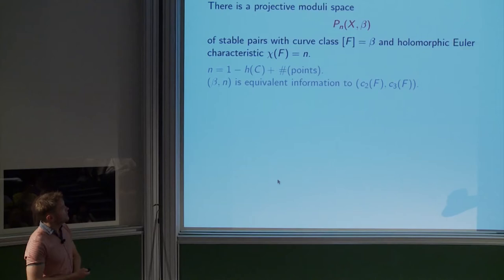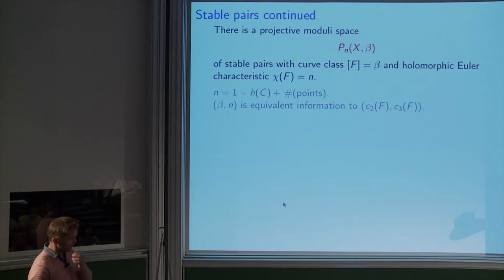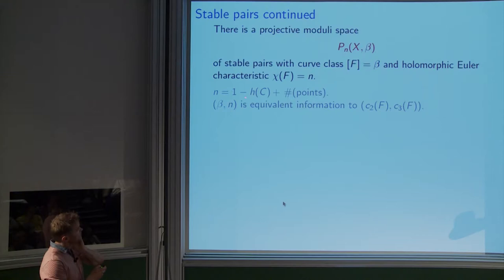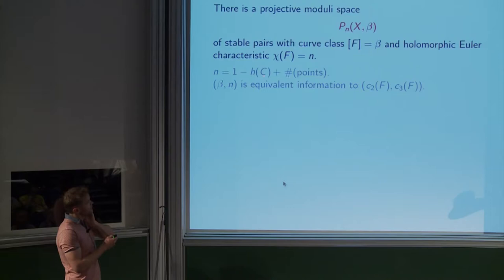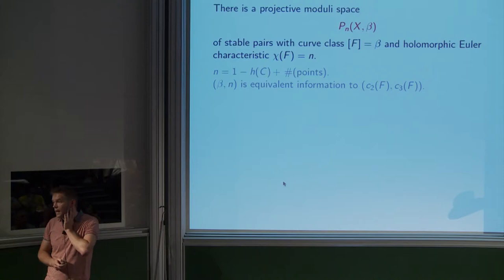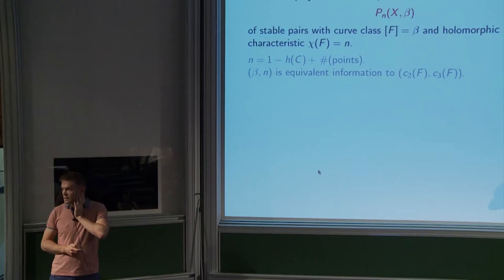Stable pairs form a projective moduli space, proved by Le Potier. We fix numerical invariants: before it was genus and curve class; here the genus is replaced by the holomorphic Euler characteristic of the sheaf, and the curve class is the same. This holomorphic Euler characteristic: if the curve is reduced, it's one minus the arithmetic genus of the curve plus the number of points. This is a deformation-invariant quantity.